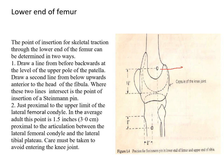For the lower end of femur, there are two methods to determine the entry point. First: a line is drawn from anterior to posterior from the upper end of the patella, and a second line is drawn flush to the anterior part of the fibula — where these two lines meet is the insertion point. The second method: approximately 3 centimeters proximal to the upper limit of the lateral femoral condyle.